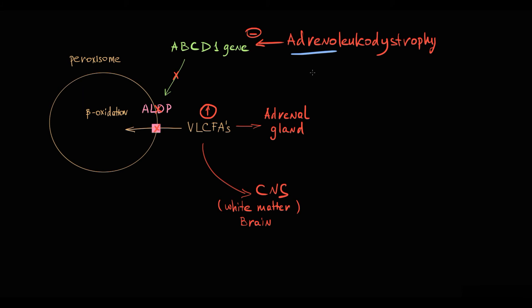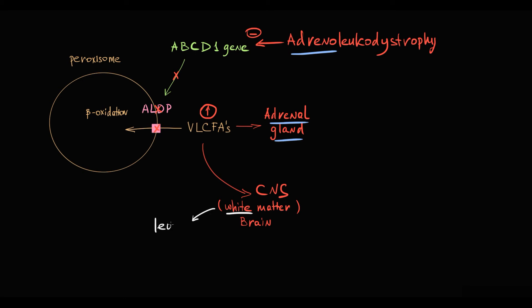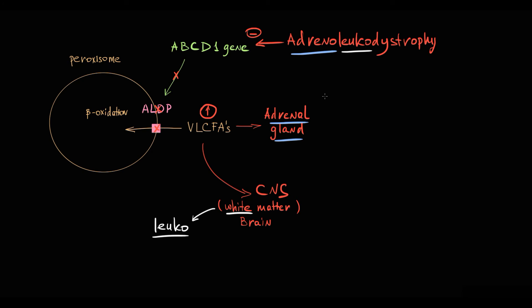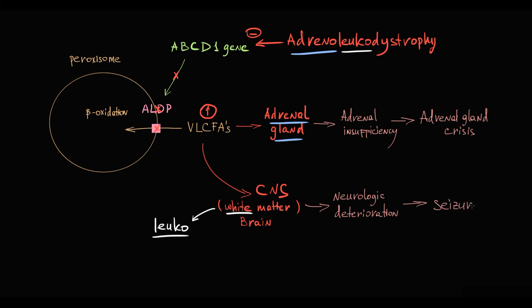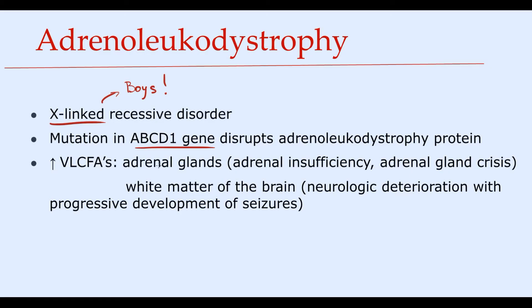'Adreno' refers to accumulation of VLCFAs in the adrenal glands; 'leuko' (from Greek leukos, meaning white) refers to accumulation in the white matter of the brain. Progressive VLCFA accumulation in the adrenal glands causes adrenal insufficiency and eventually adrenal crisis. Accumulation in white matter causes progressive seizures. Both adrenal crises and seizures eventually lead to coma and death.